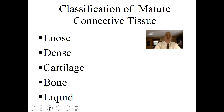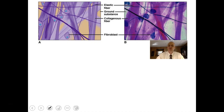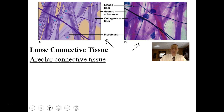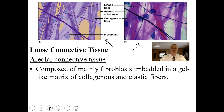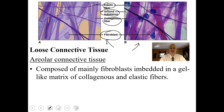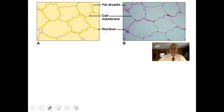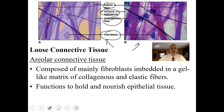Mature connective tissue includes loose, dense, cartilage, bone, and liquid connective tissues. Starting with loose connective tissue — also known as areolar connective tissue — it's composed mainly of fibroblasts embedded in a gel-like matrix of collagenous and elastic fibers. The ground substance is gelatinous. It functions to hold and nourish epithelial tissue, and you'd often find areolar right underneath the skin.